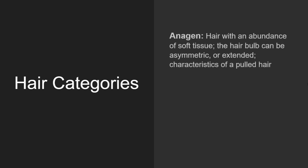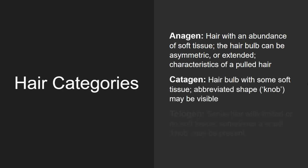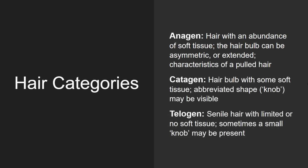These stages are anagen, catagen, and telogen. Anagen, which is typically plucked hair, contains an abundance of soft tissue. The hair bulb can be asymmetric or extended.